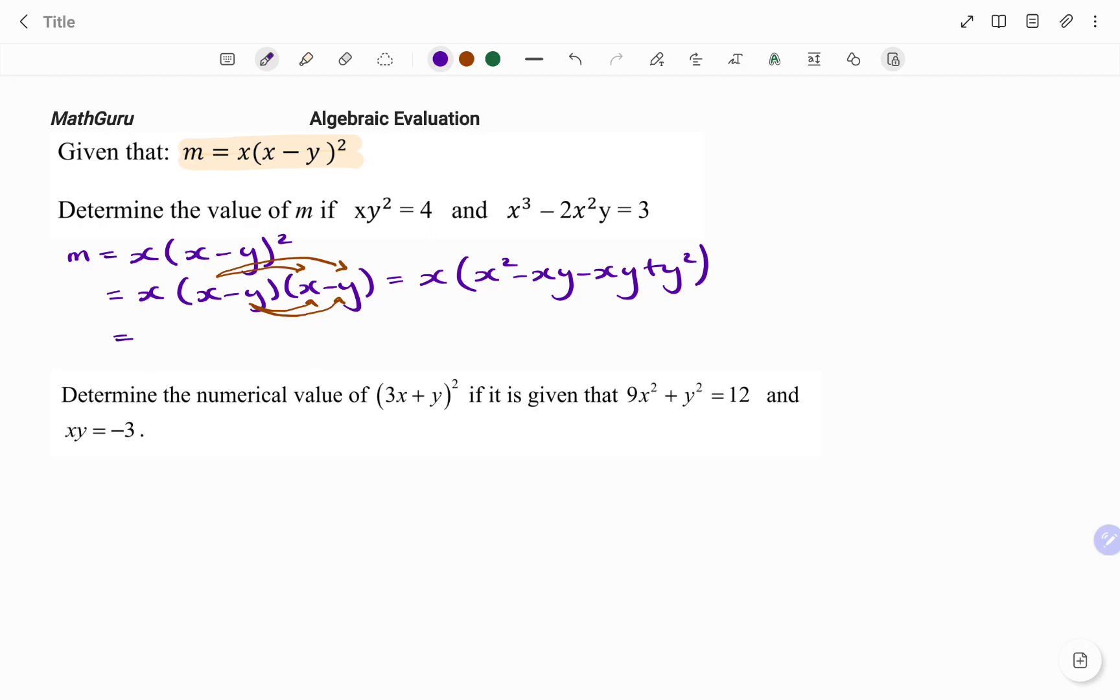That will be equal to x in bracket x squared minus 2xy plus y squared. And if I use the x in front of the bracket to multiply all the terms in the bracket, I'm going to have x cubed minus 2x squared y plus xy squared.